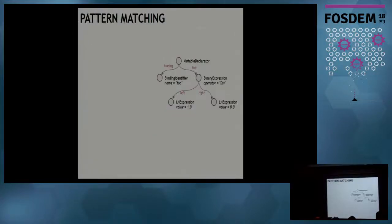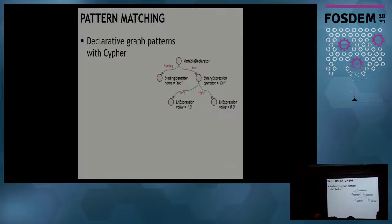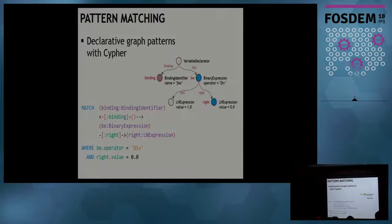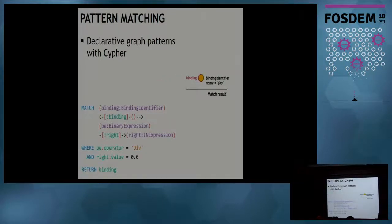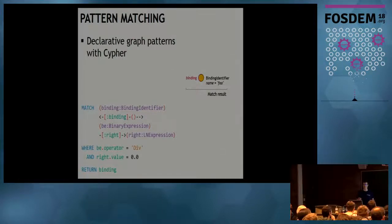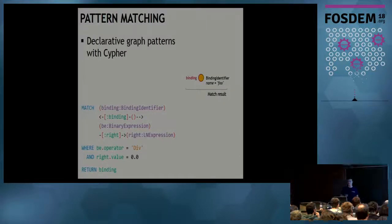Once we have these graphs, we can do all sorts of pattern matching. We use Cypher as our declarative graph pattern language. For example, you don't want your code to do divisions by zero — so you create a Cypher rule that matches binding identifiers in a binary expression, filters where the expression is a division and the right value is zero, and returns the binding. It's a well-known truth that the sooner a developer gets feedback on errors, the cheaper it is to fix them.